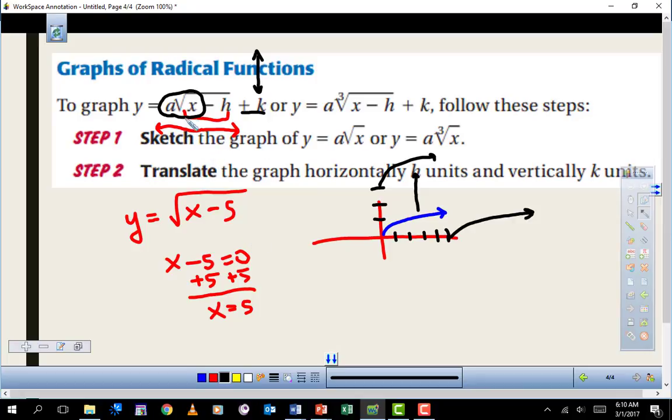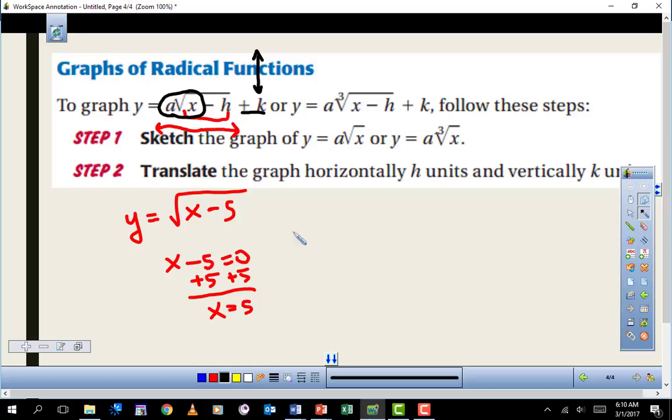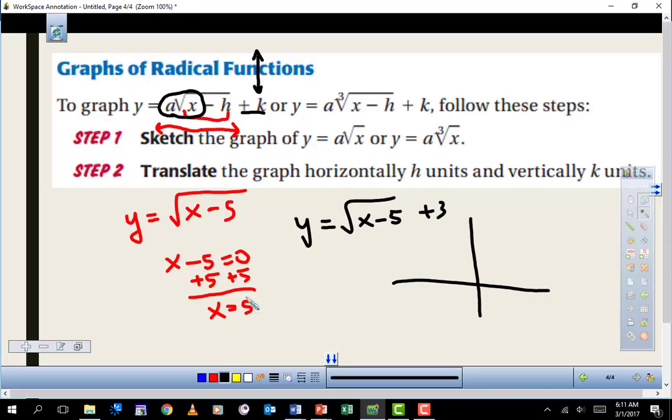Now here's the thing. We have a combination of shifts. We have a shift that's horizontal and we have a shift that is vertical. So in this case, let's take a look at what would happen. Let's say my function I'm dealing with is y equals the square root of x minus 5 and then plus 3. What would that do to my graph?